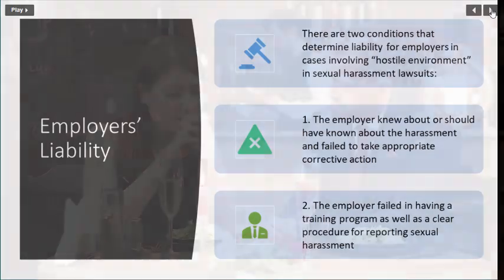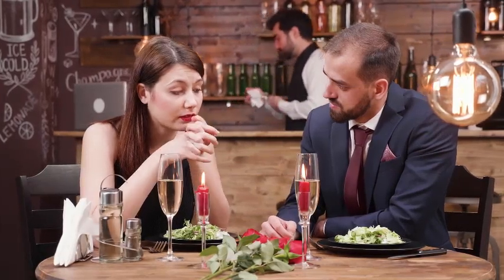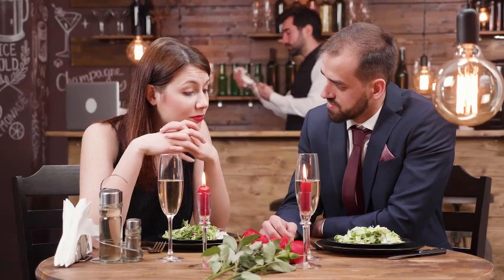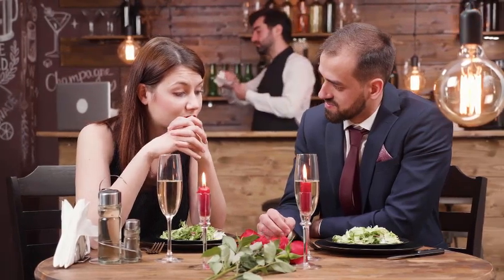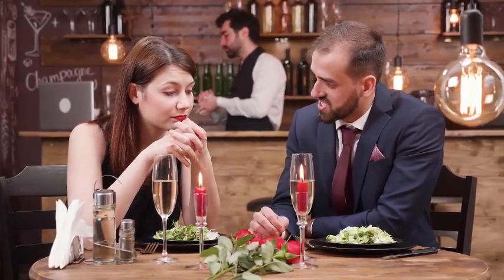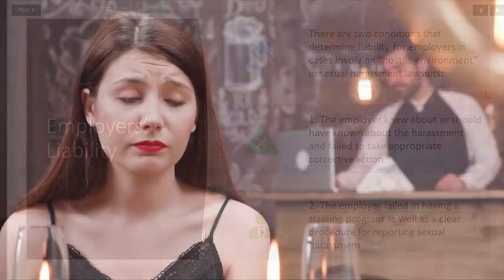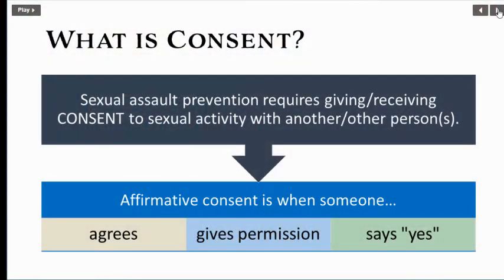There are two conditions that determine employer liability in hostile environment sexual harassment lawsuits. First, it must be shown that the employer knew about or should have known about the harassment and failed to take appropriate corrective action. Second, it must be shown that the employer failed to have a training program as well as a clear procedure for reporting sexual harassment.